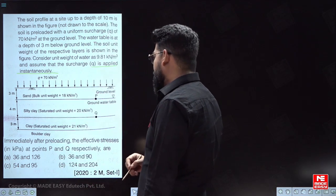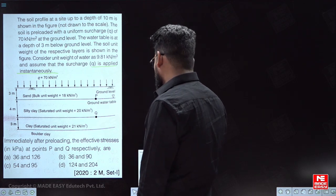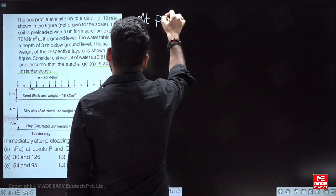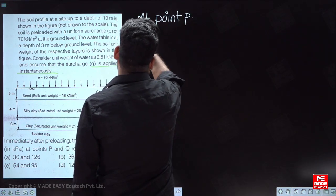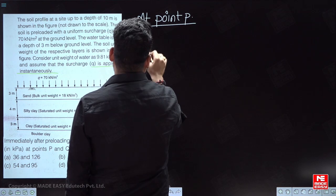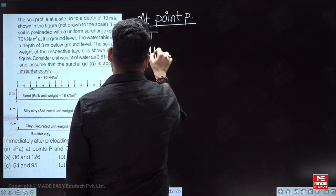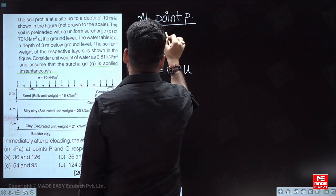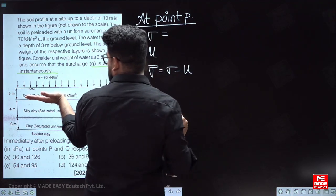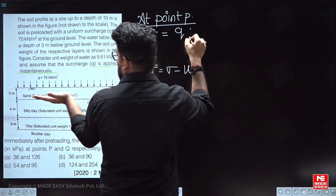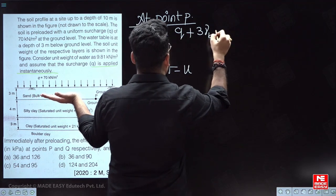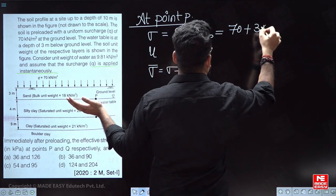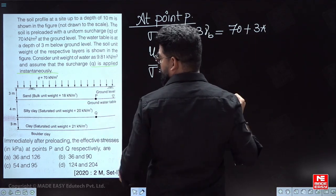Immediately after pre-loading, we need to find the effective stress at points P and Q. At point P, effective stress equals total stress minus pore water pressure. First, we determine the total stress at point P: it will be q plus 3 × γbulk, which is 70 plus 3 × 18.